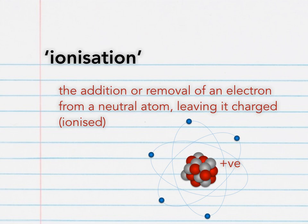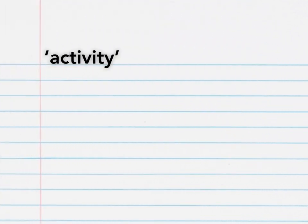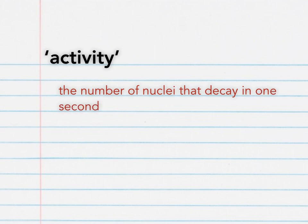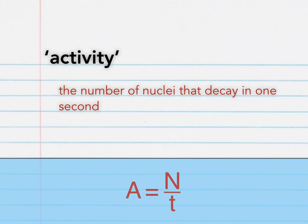Our next definition is activity. Like many of our previous definitions, there's an equation which goes with this. Activity is the number of nuclei that decay in one second. The equation to help remember this one is A equals N divided by T. A is activity in Becquerels, N is the number of nuclei decayed, and T is time in seconds.